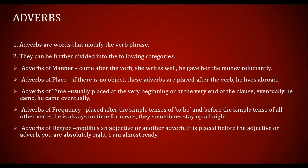Adverbs of frequency are placed after the verb 'to be' and before the simple tense of all other verbs. Words like 'always,' 'sometimes,' 'rarely,' 'frequently' are adverbs of frequency. For example: 'he's always on time for meals' — 'always' tells the frequency. 'They sometimes stay up all night' — 'sometimes' tells how frequently the action occurs. 'She barely visits her grandparents' — 'barely' is also an adverb of frequency.